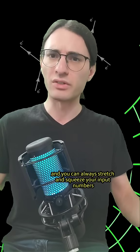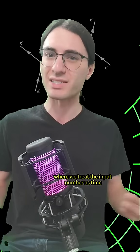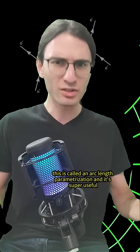And you can always stretch and squeeze your input numbers so that the point moves through 3D space at one unit per second, where we treat the input number as time. This is called an arc length parameterization, and it's super useful.